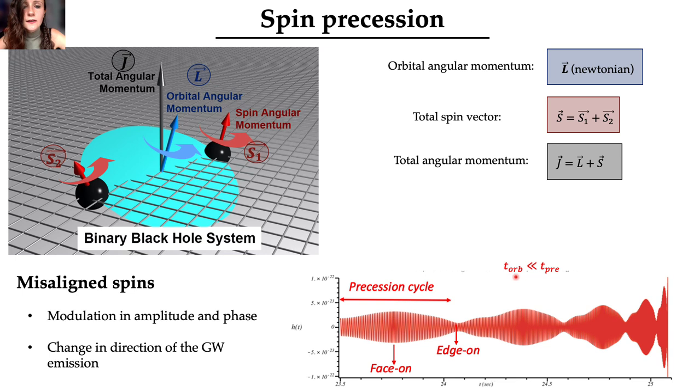It's important to notice that the orbital timescale, which is the timescale of this tiny modulation in the signal, is much shorter than the precession timescale, the timescale needed to complete a full precession cycle.